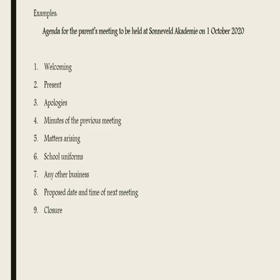Now for the agenda to my meeting. At the top it says: Agenda for the parents meeting to be held at Sonnefeld Academy on 1 October 2020. Keep in mind that the information here needs to correspond with the information sent out in the notice. The agenda outlines all the specific points to be discussed: point 1 welcoming, point 2 present and absent, point 3 apologies, point 4 minutes of the previous meeting, point 5 matters arising, point 6 school uniforms, point 7 any other business, point 8 proposed date and time of next meeting, and point 9 closure.